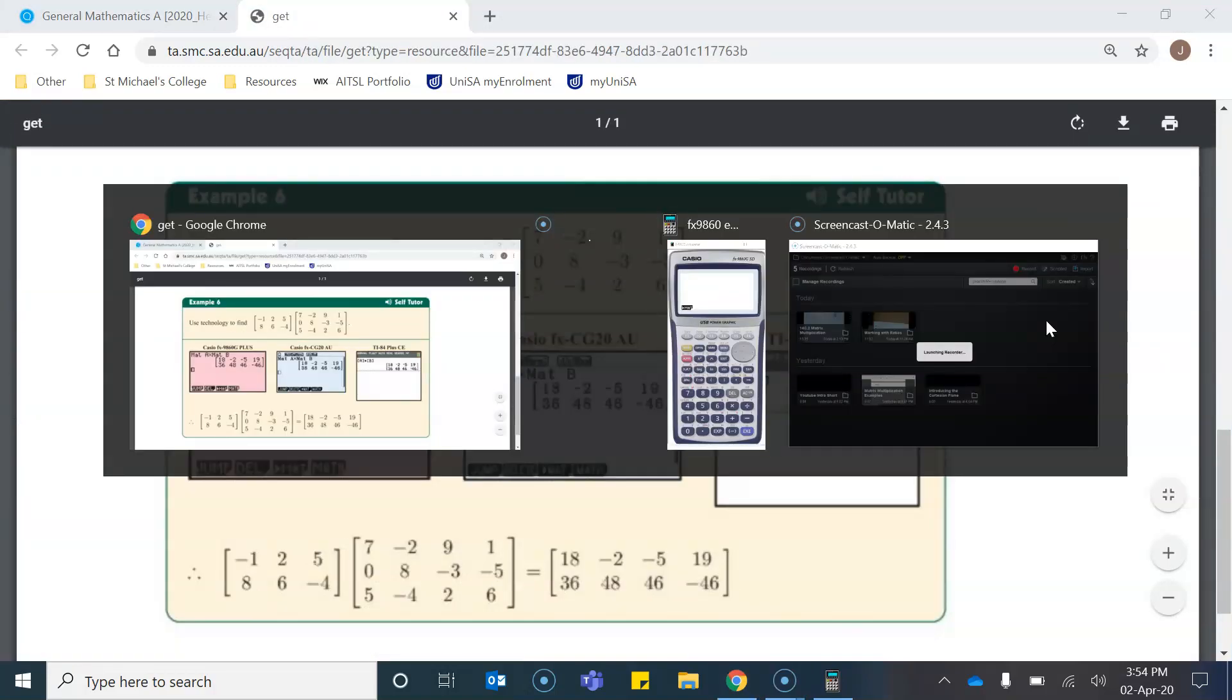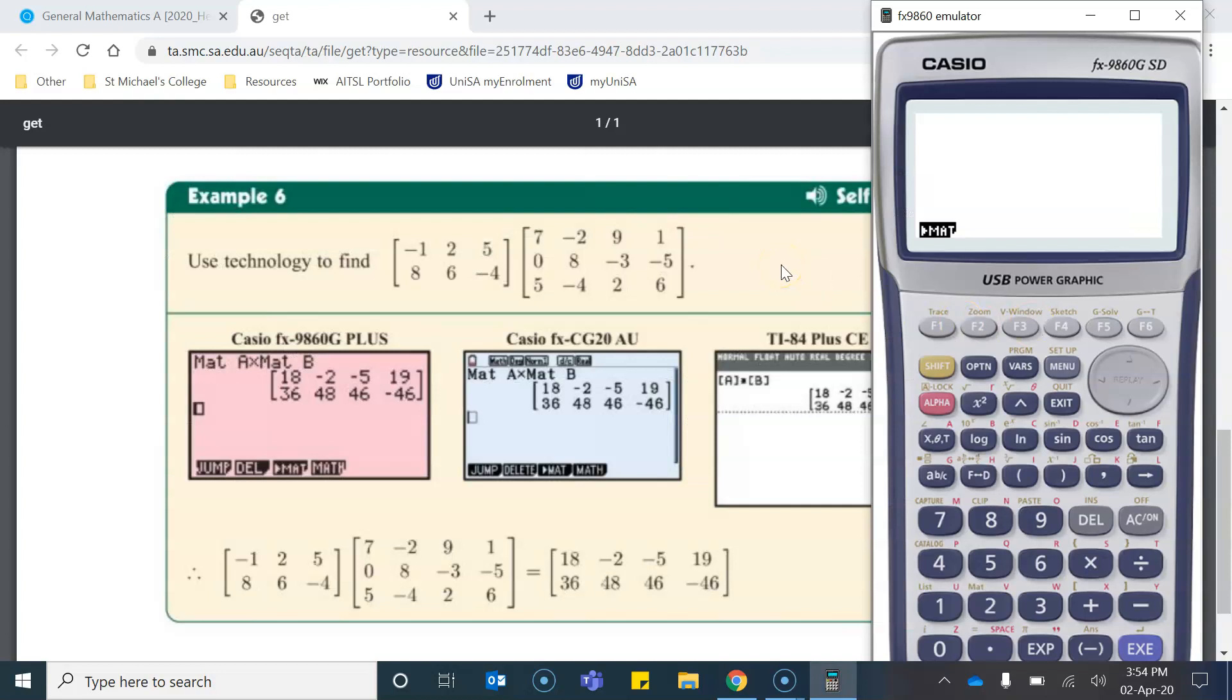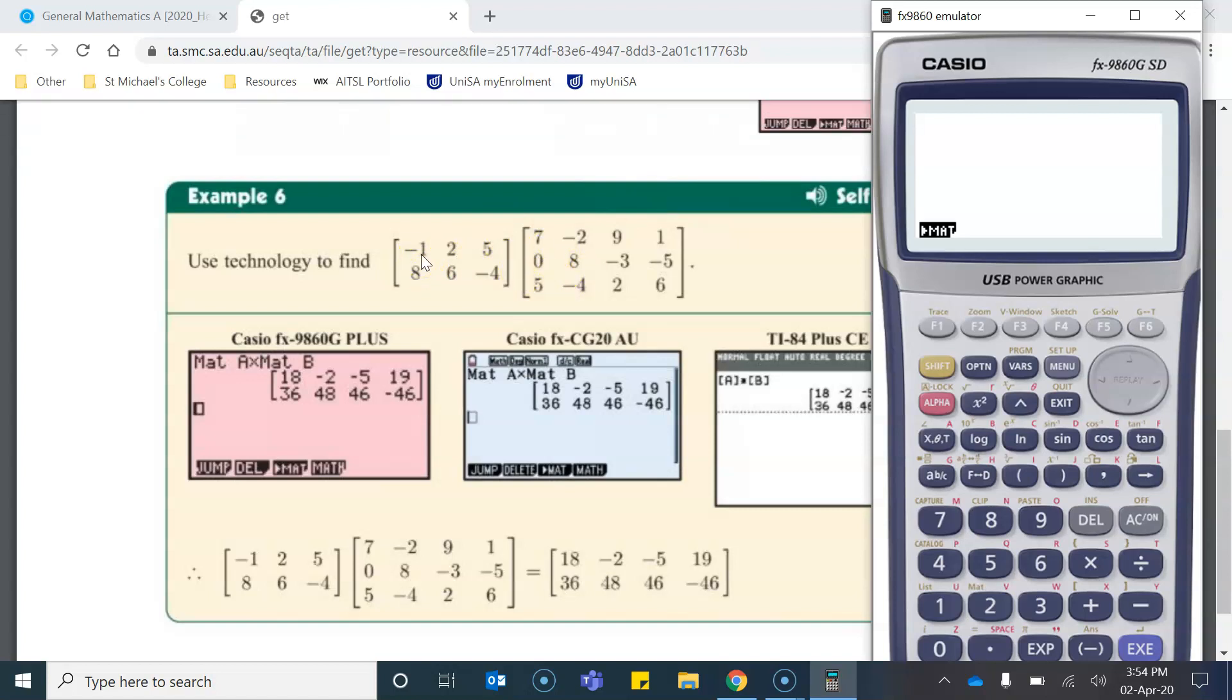We'll go through an example here. Once you're in the calculator, we have two matrices here. Now remember, you have to check the order to make sure that we can actually do the multiplication. This matrix is a 2 by 3, this is a 3 by 4. Therefore, the orders check out. We're okay to do that multiplication.